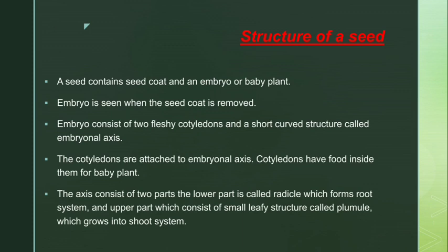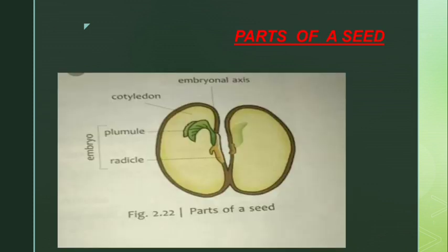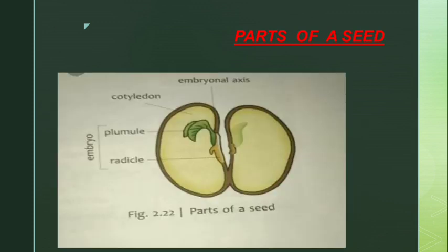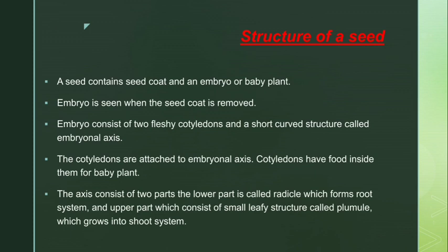The embryo is seen when the seed coat is removed. When you remove the outer brown layer, you will see the embryo. The embryo consists of two fleshy cotyledons and a short curved structure called the embryonal axis. The cotyledons are attached to the embryonal axis and have food stored inside them for the baby plant.